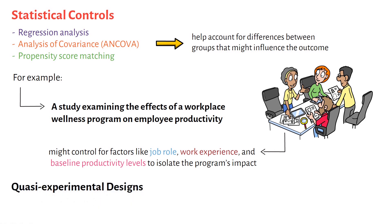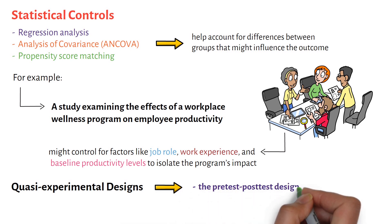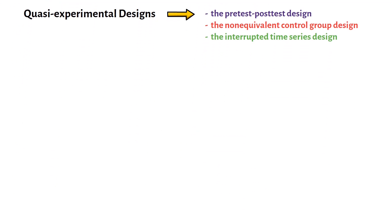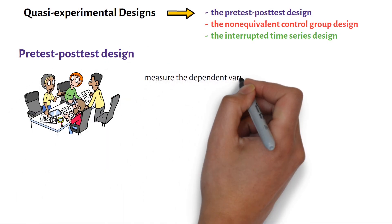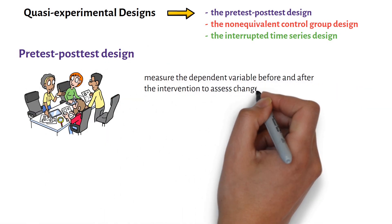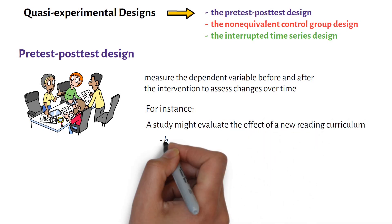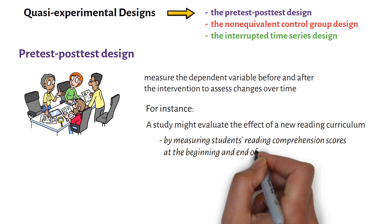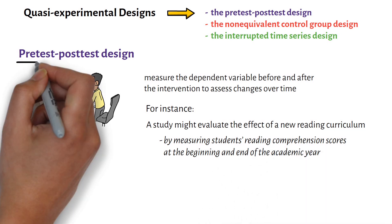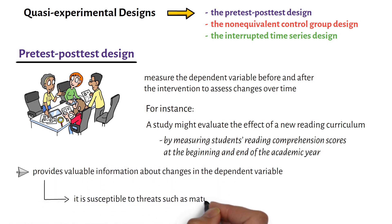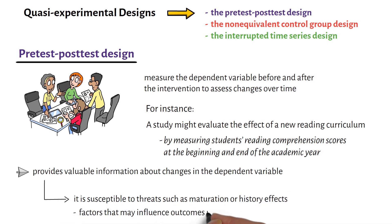Quasi-experimental designs encompass a variety of specific methodologies, each tailored to different research contexts. Among the most commonly used are the pre-test/post-test design, the non-equivalent control group design, and the interrupted time series design. In the pre-test/post-test design, researchers measure the dependent variable before and after the intervention to assess changes over time. For instance, a study might evaluate the effect of a new reading curriculum by measuring students' reading comprehension scores at the beginning and end of the academic year. While this design provides valuable information about changes in the dependent variable, it is susceptible to threats such as maturation or history effects — factors that may influence outcomes independently of the intervention.